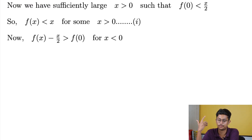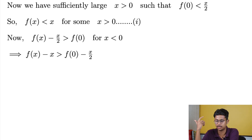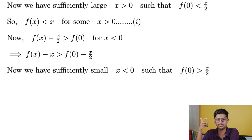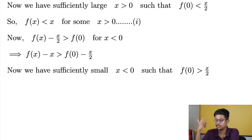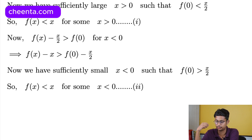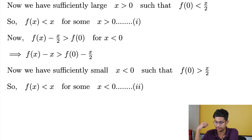Now, f(x) - x/2 > f(0) for some x < 0, again using the property that f(x) - x/2 is a decreasing function. Then f(x) - x > f(0) - x/2, subtracting x/2 from both sides. For sufficiently small x < 0 such that f(0) > x/2, we get f(x) > x for some x < 0.